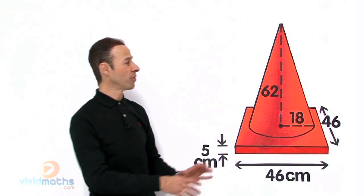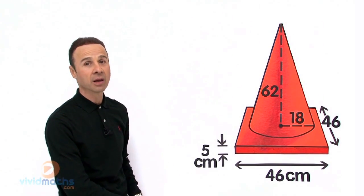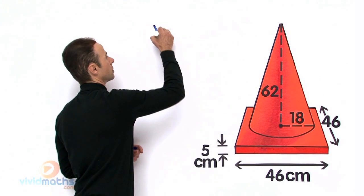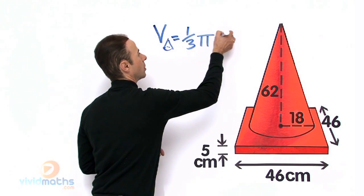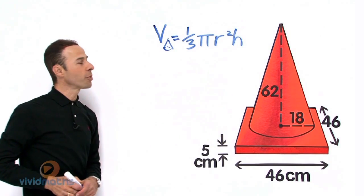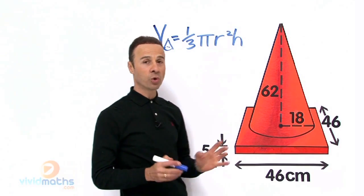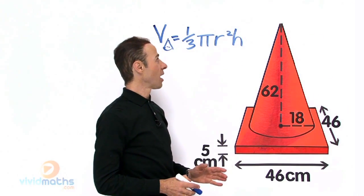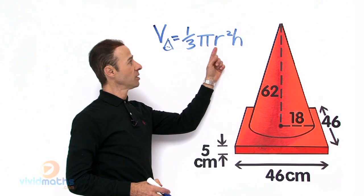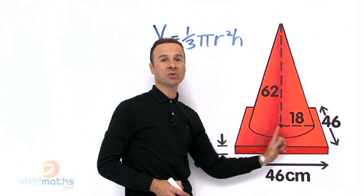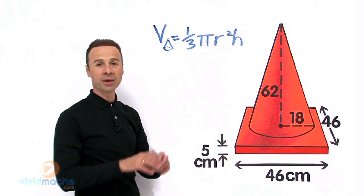So let us start at phase number 1 — we are going to work out the volume for that cone. The formula for a cone is: volume equals one third times pi times r squared times the height. All units are in centimeters. We have a height of 62 centimeters, so that goes in for h. The radius is 18 centimeters — from the center to the edge — so we put 18 in for r. Plug the rest into the formula and come up with the answer.